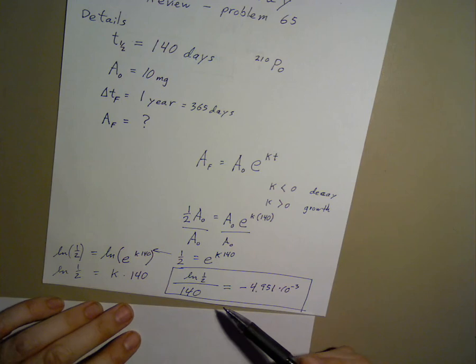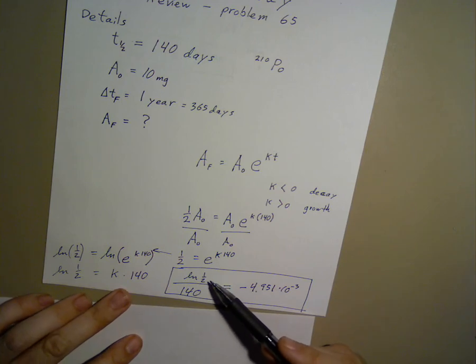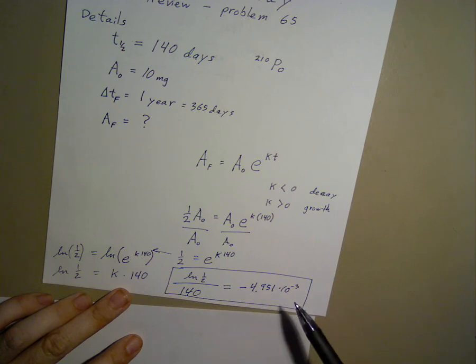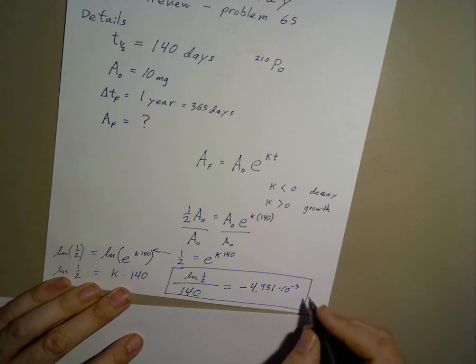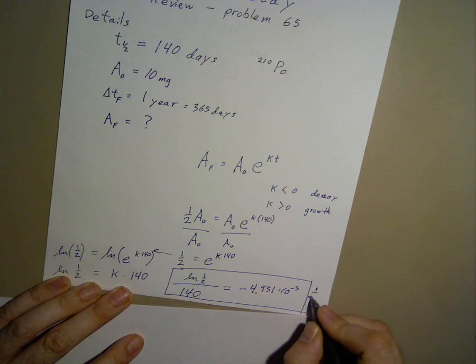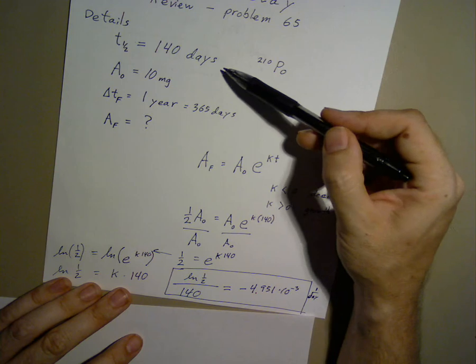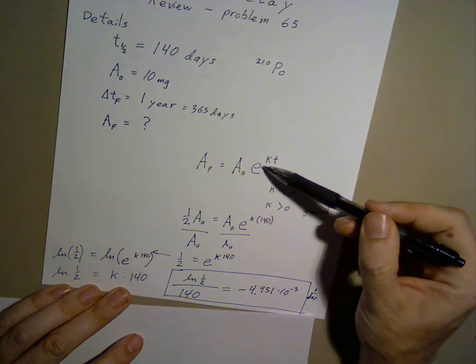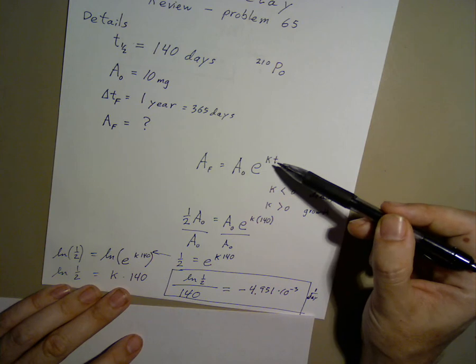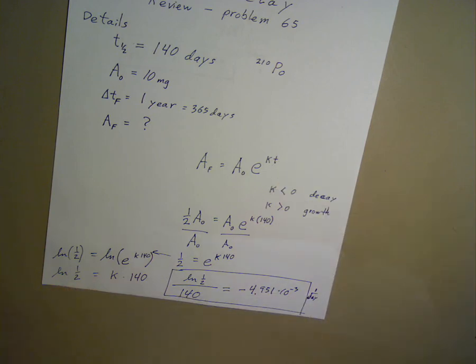We can rewrite this as natural log of one-half over 140 equals k equals negative 4.951 times 10 to the negative third. This has units of 1 over day, or 1 per day, because our time unit was in days and kt must be dimensionless. You can't have an exponent with a unit.